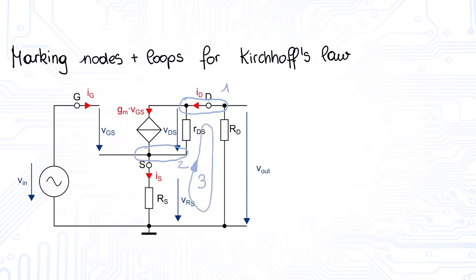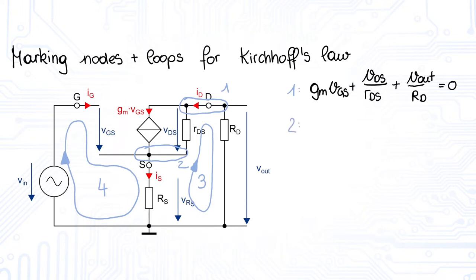The equation according to node 1 is GM times VGS plus VDS over RDS plus Vout over RD is 0. The equation according to node 2 is consequently minus GM times VGS minus VDS over RDS plus VRS over RS is 0.